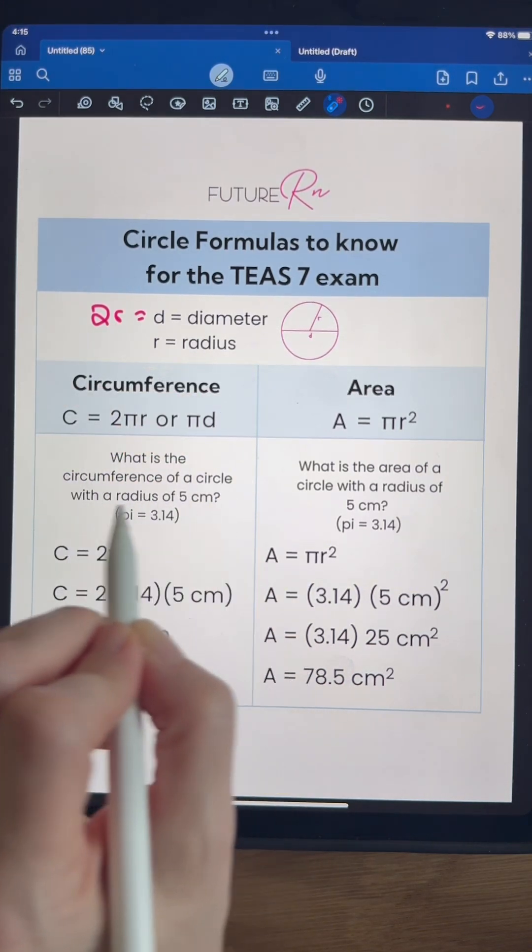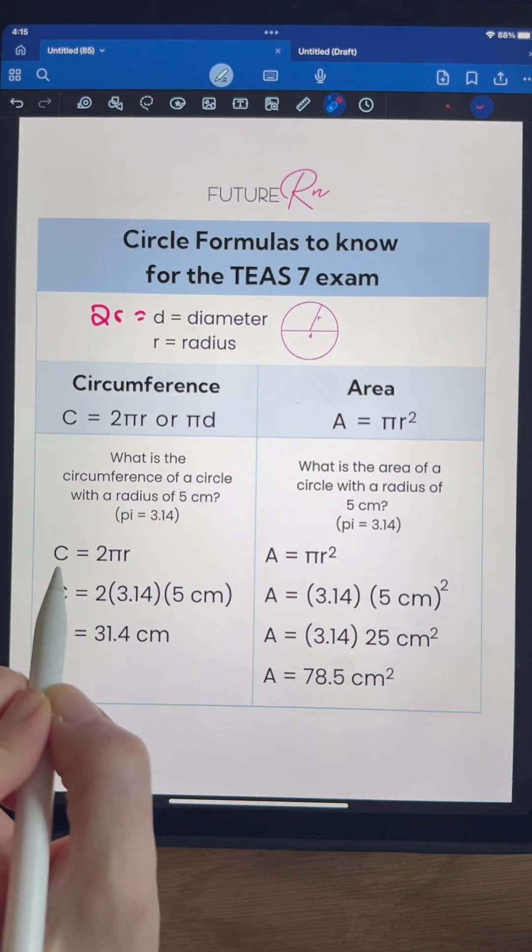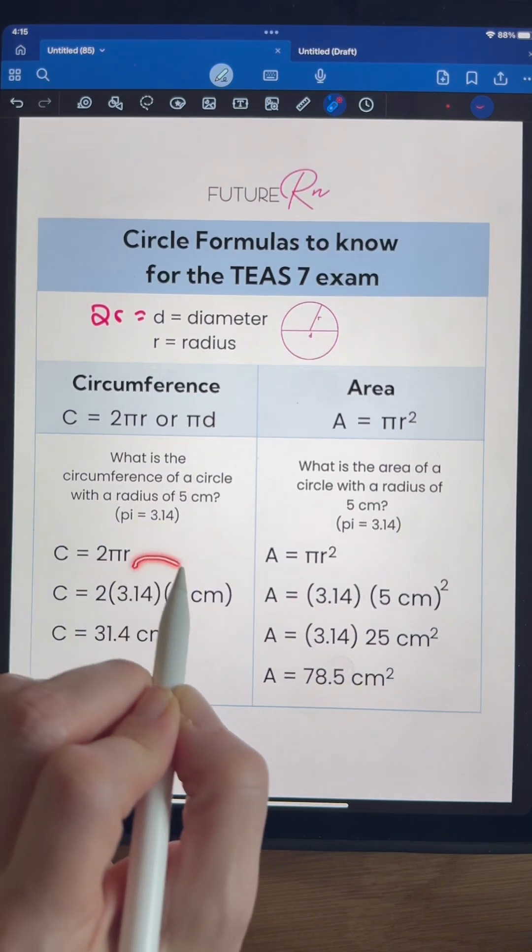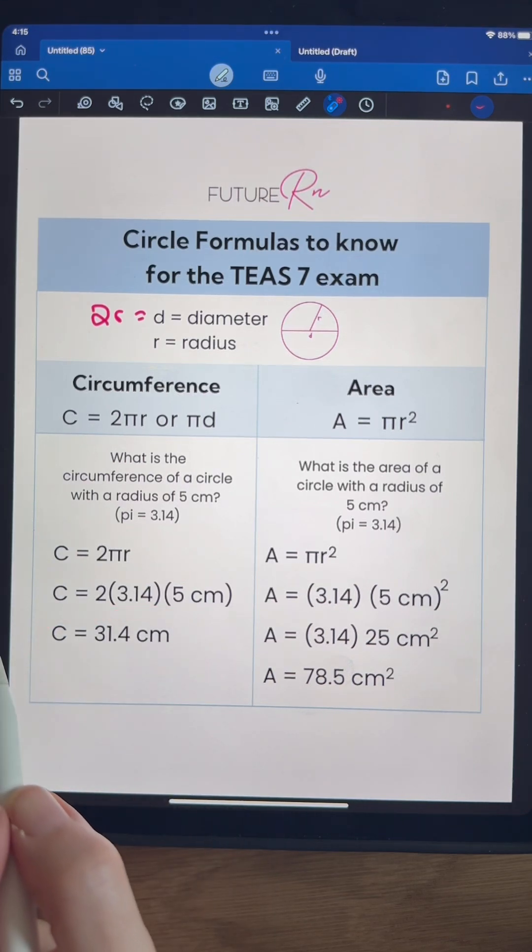So a quick example, what is the circumference of a circle with a radius of 5 centimeters? Assume pi is 3.14. So circumference equals 2 times pi times R. We just plug in your numbers: 2, pi, and then they told us the radius was 5. Finish that off on your calculator, and there's your correct answer.